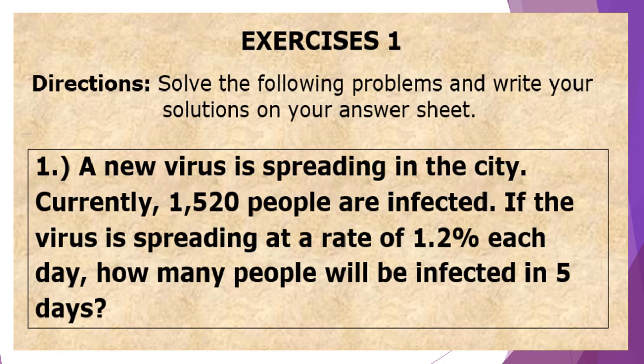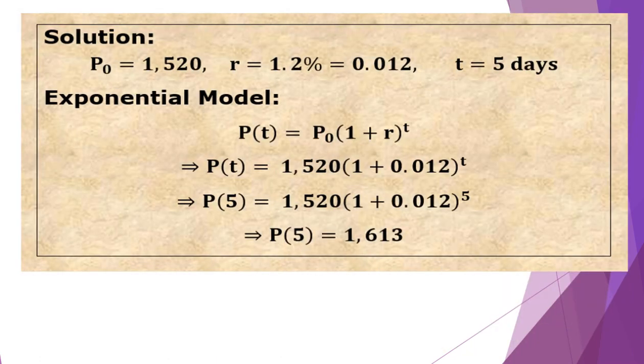Number 1. A new virus is spreading in the city. Currently, 1,520 people are infected. If the virus is spreading at a rate of 1.2% each day, how many people will be infected in 5 days? For the solution, we have the initial amount P₀ = 1,520, and the rate is 1.2%, converted to decimal, that's 0.012.